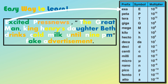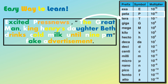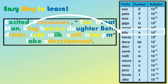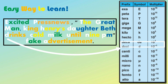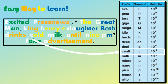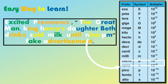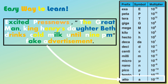E stands for exa, P stands for peta, T stands for tera, G for giga, M for mega, K for kilo, H for hecto, Da for deca, D for deci, C for centi, M for milli, U for micro, N for nano, P for pico, F for femto, A for atto.